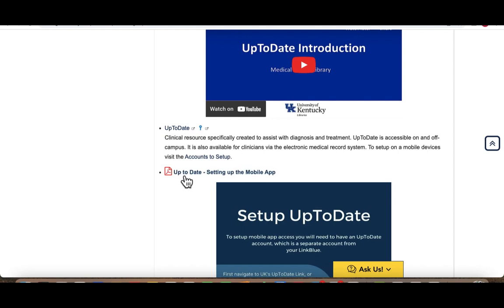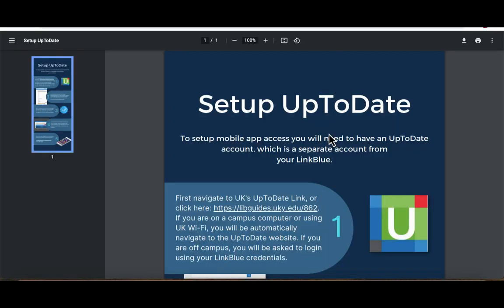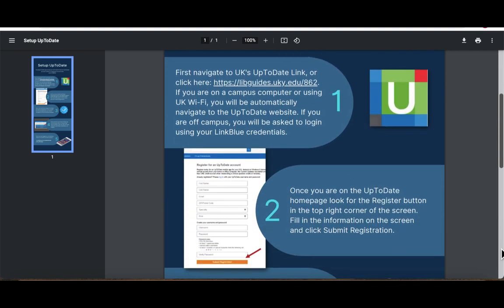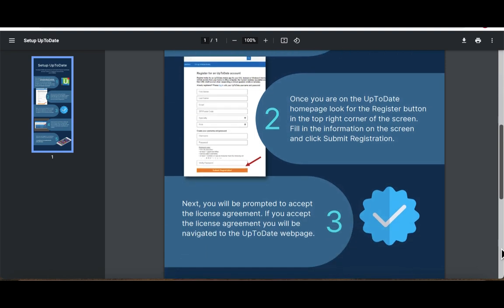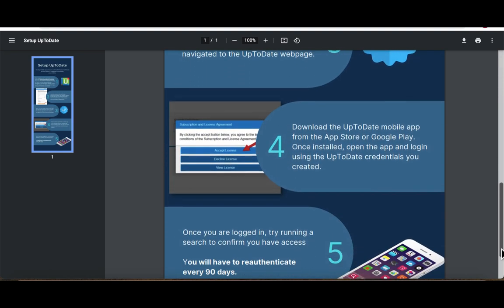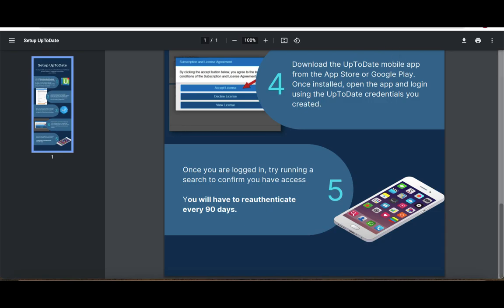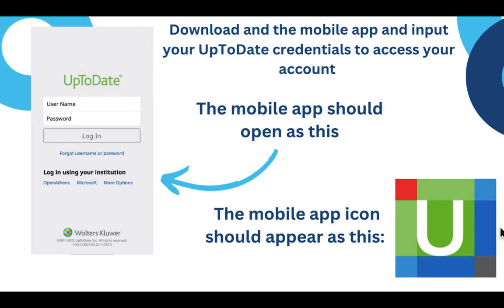Underneath the UpToDate link you can select UpToDate: Setting Up the Mobile App. The instructions on how to set up your UpToDate mobile app can be found here and should look like this. The downloaded mobile app should have an icon that appears as this, and once you upload it to your mobile device it will also appear as this.